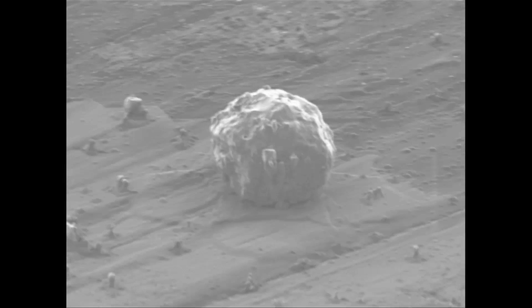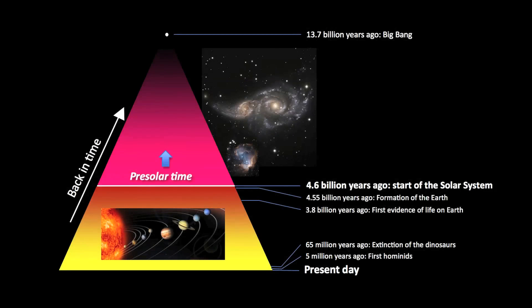We are studying pre-solar grains to understand where the material that the solar system and the Earth is made of comes from, what kind of stars form that material. This is, of course, the origin of all the material that is here on Earth.